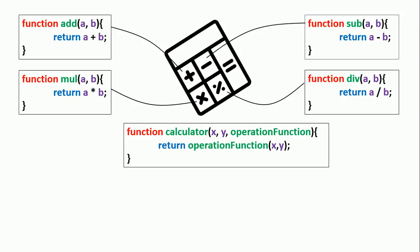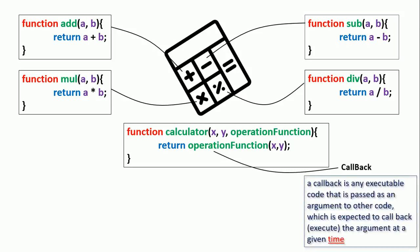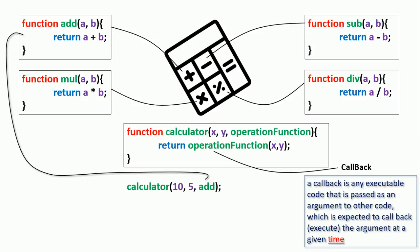Inside we return the operation function of those two numbers. So the calculator is executable code that takes another executable code — the operation function — and then runs, executes, or callbacks that code at a given time. The operation function here is the callback. When we call calculator with 10 and 5 and pass the function 'add', the calculator executes the code inside 'add' and gives us the result 15.